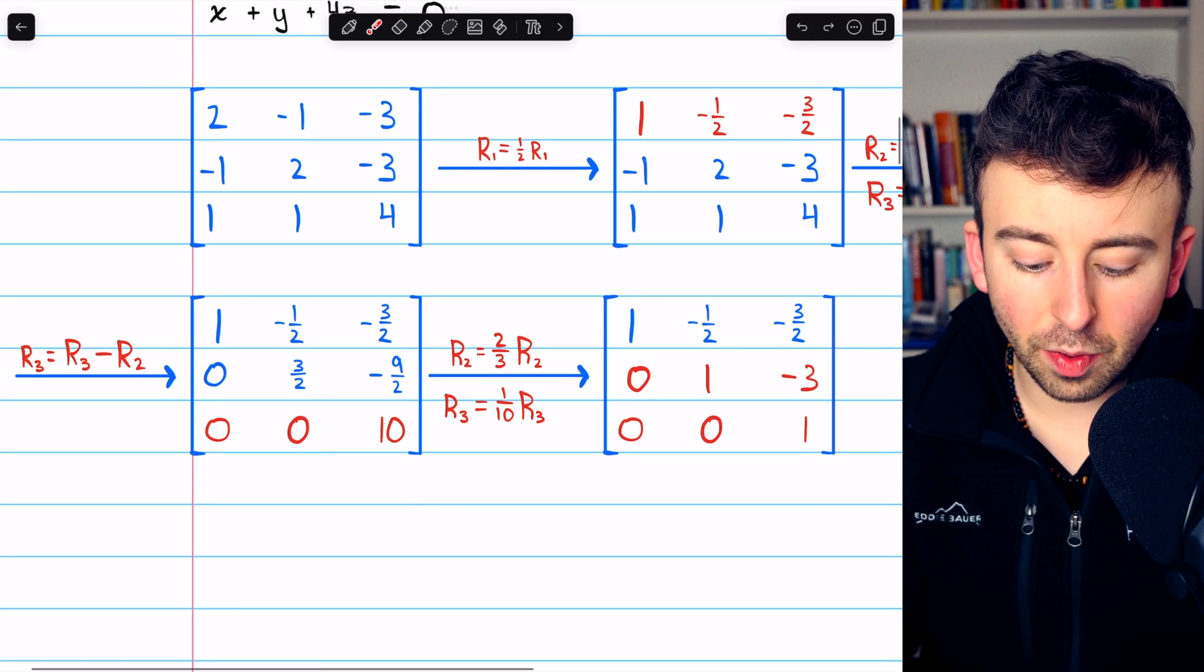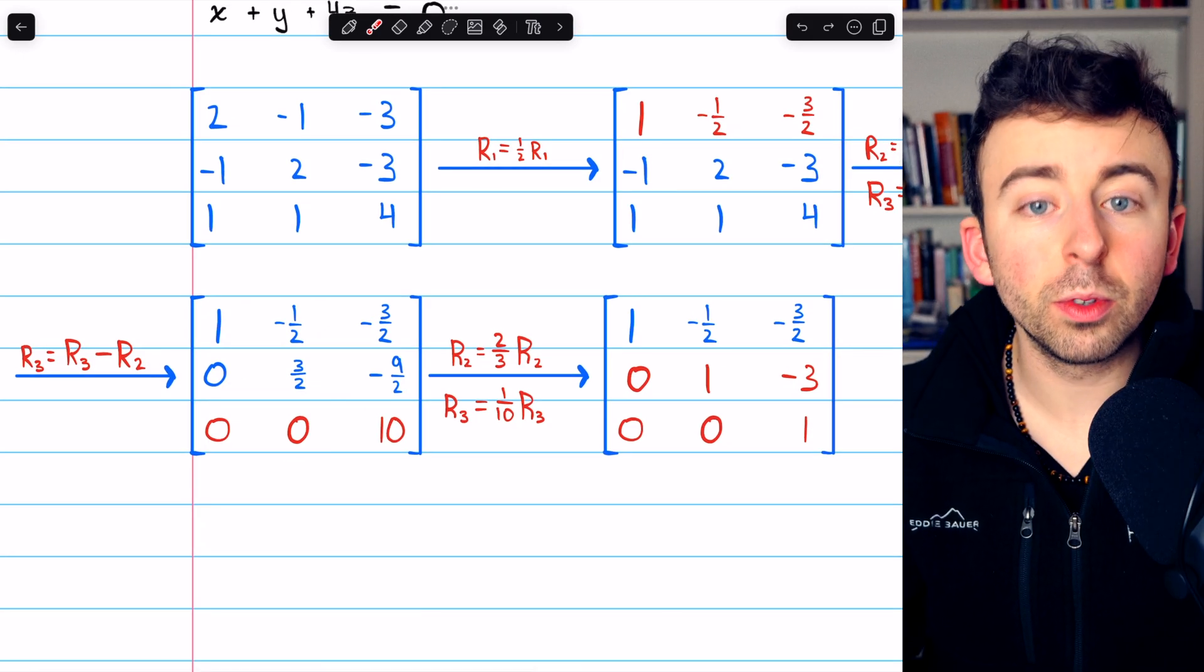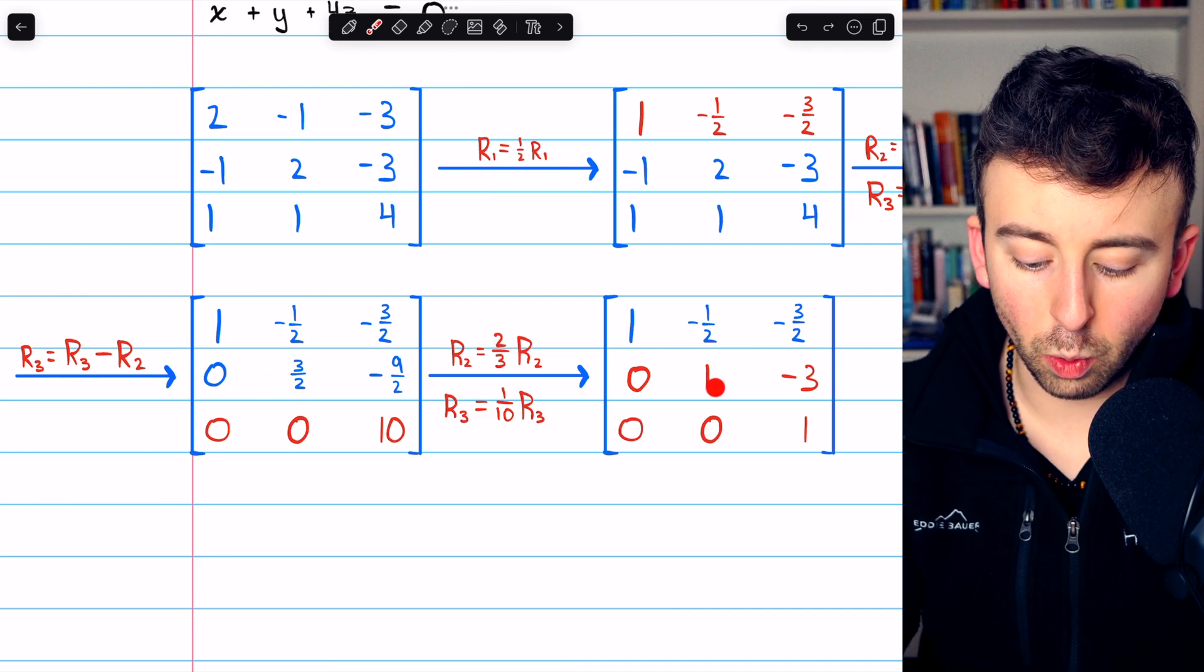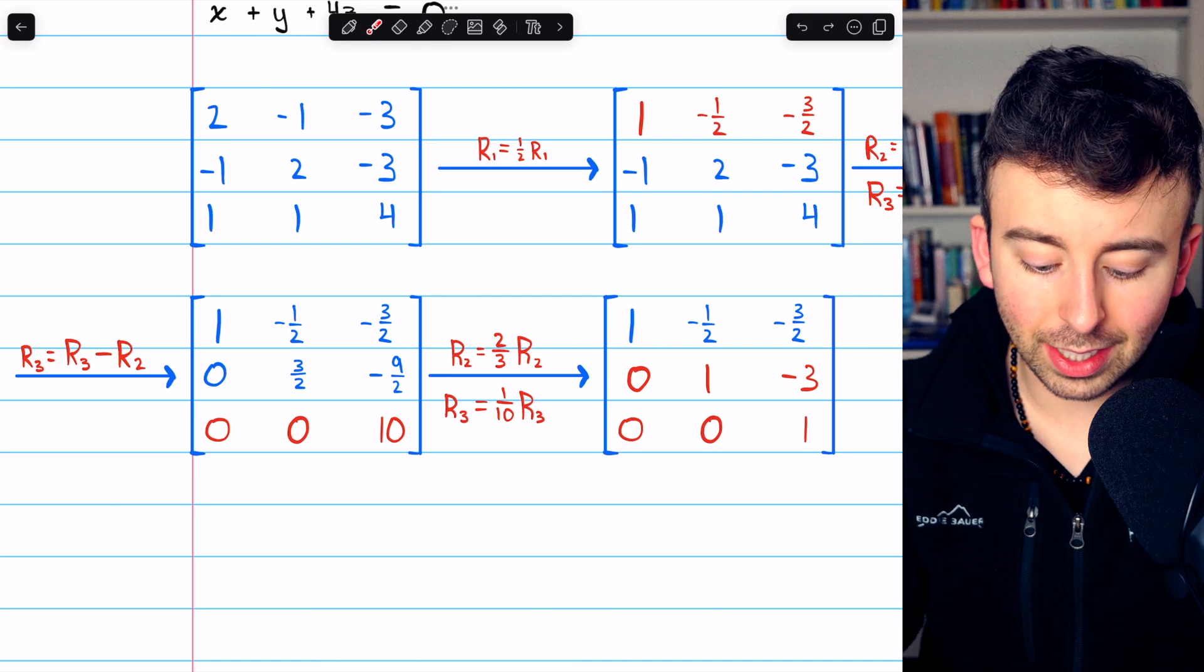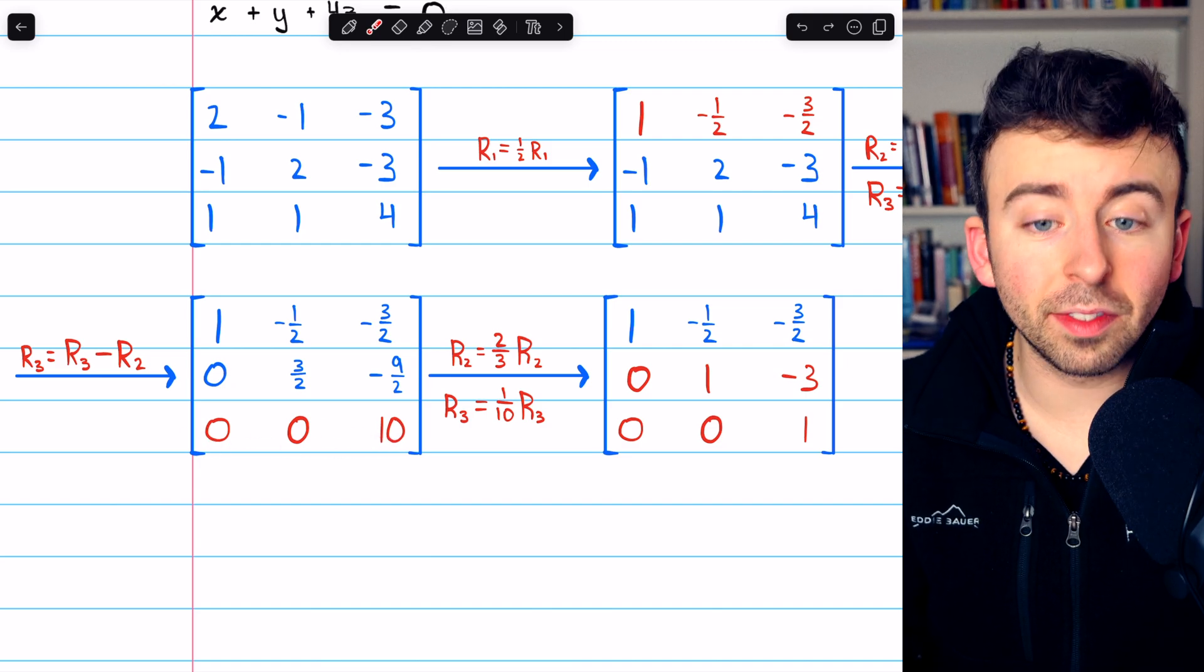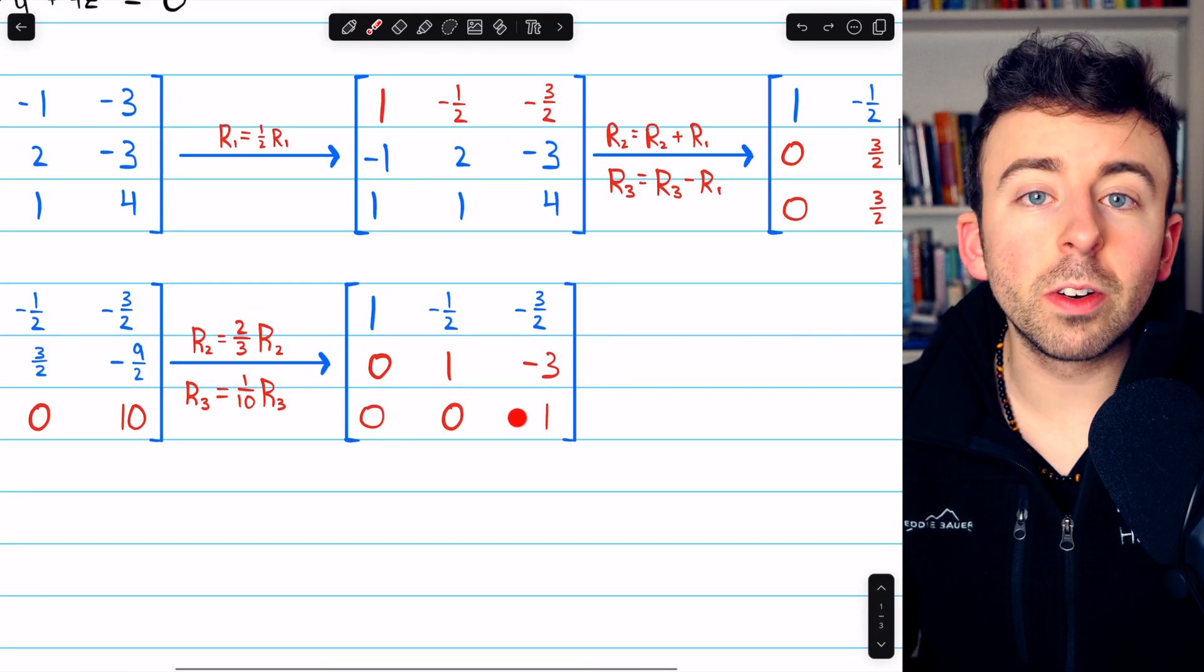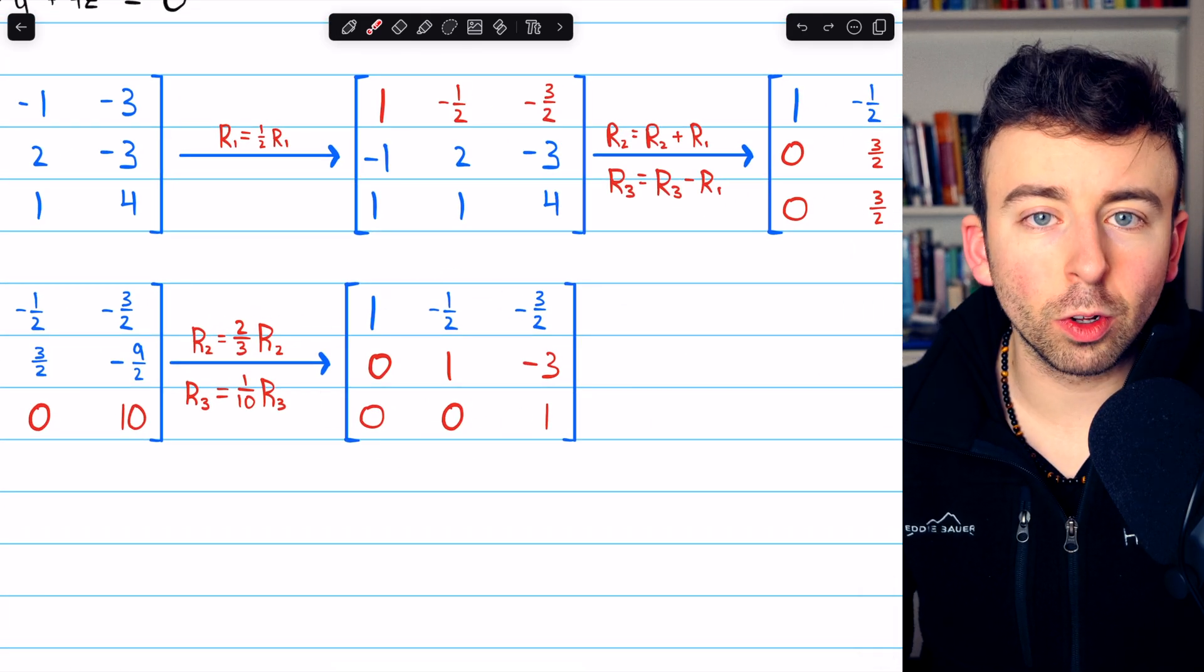Now we can divide row two by three halves, which is the same as multiplying it by two thirds in order to turn this leading entry into a one. And also now to clean up row three, all we have to do is multiply it by one tenth. We are now in row echelon form.